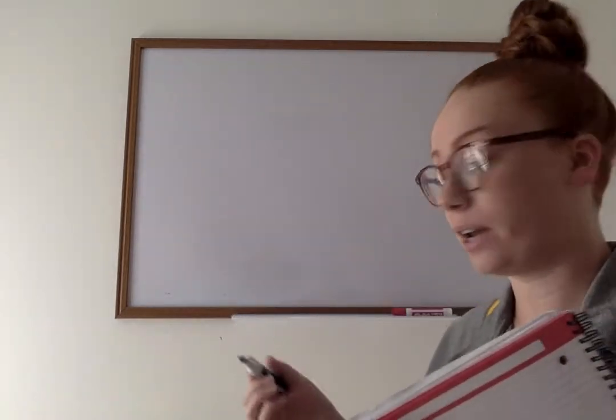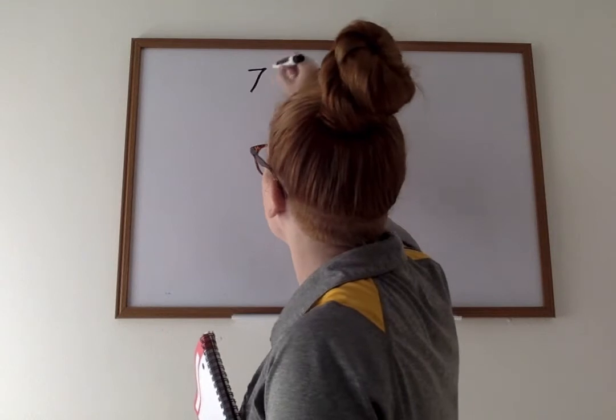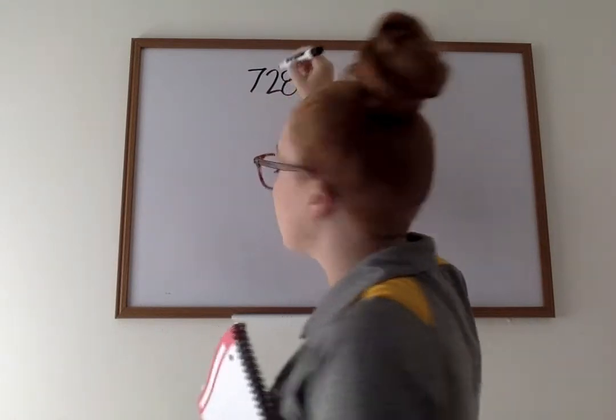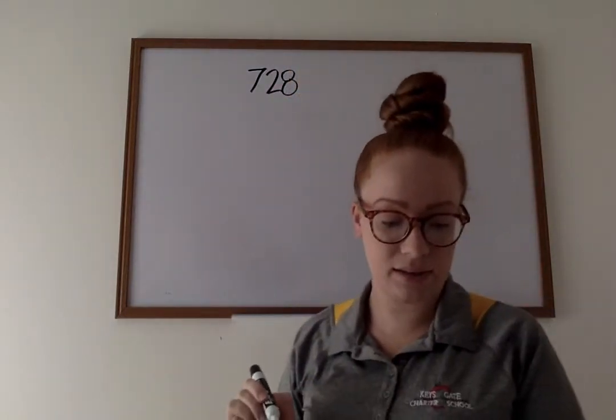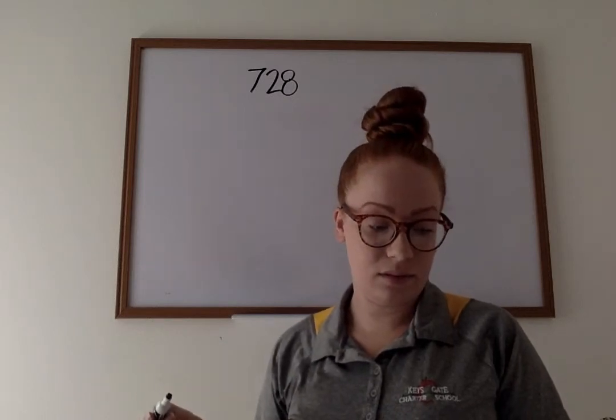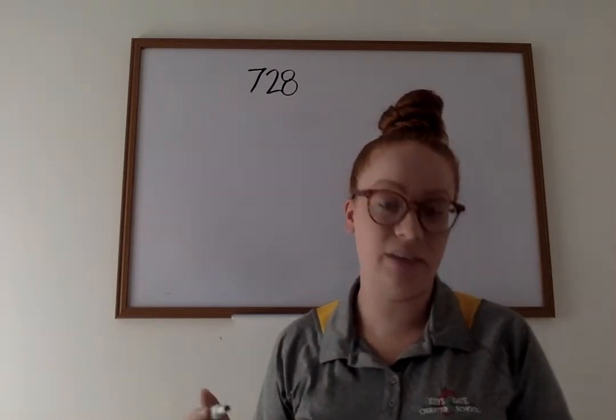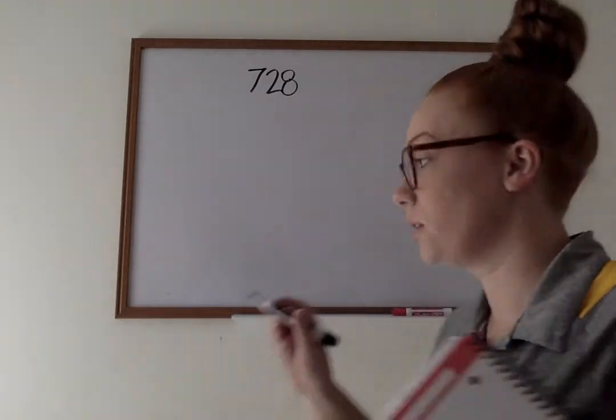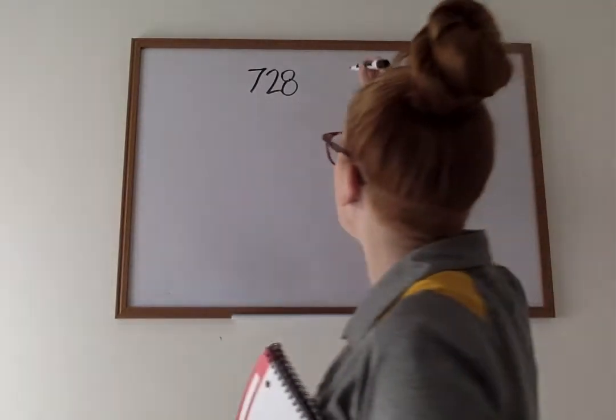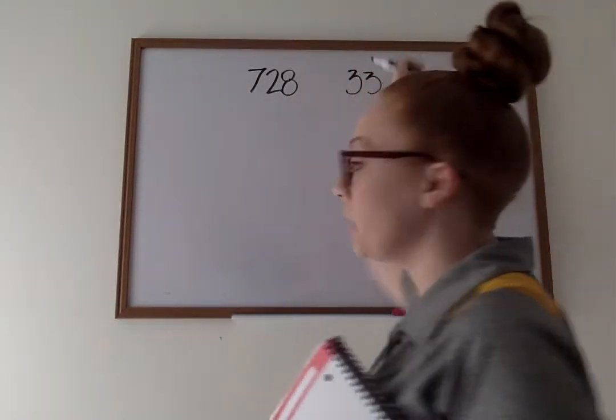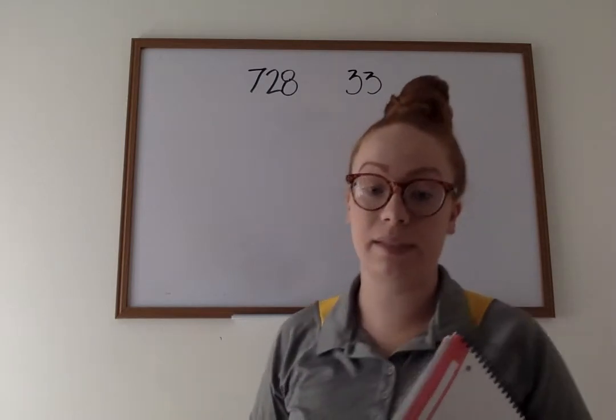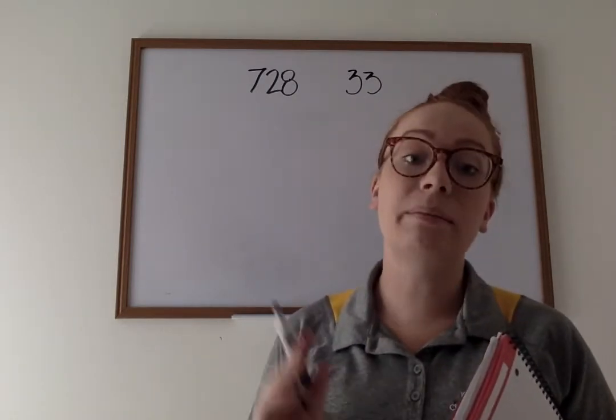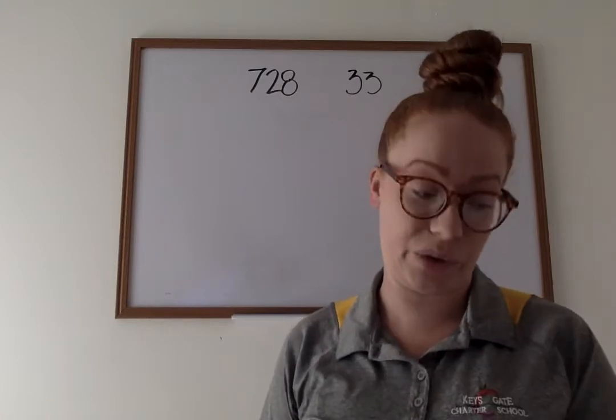First one, a concert is playing at a venue that has 728 seats. 728 sounds important. I'm going to write it on the board. That's how many seats the concert venue has. Which is the best estimate for the total number of tickets available for 33 shows? Again, another number that's important. 33. Now if you listened in our problem, they want us to estimate. So we need to make sure we estimate.